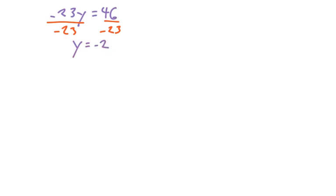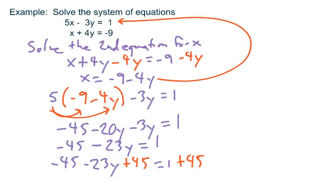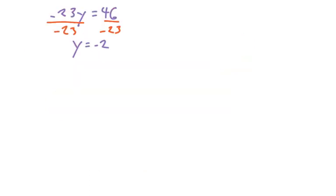Now to get the x value, go back, look for whatever equation you used to solve for x, and substitute there. So the equation we had for x was x equal negative 9 minus 4y.